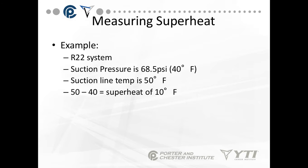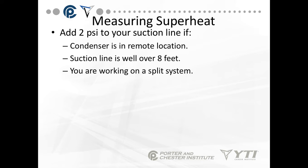For example, on an R22 system, if the suction pressure is 68.5 psi, which is 40 degrees, and the suction line temperature is 50 degrees, then 50 minus 40 gives a superheat of 10 degrees. If your condenser is in a remote location and the suction line is over eight feet and you take your superheat temperatures at the outside unit, add 2 psi to your suction pressures to account for pressure drop before doing your temperature-pressure conversion.